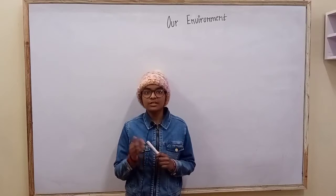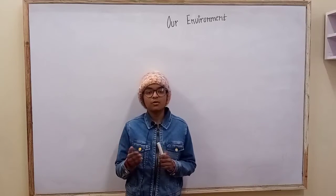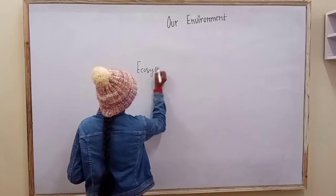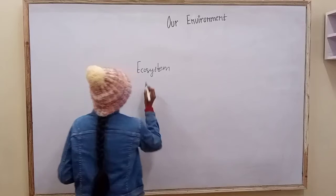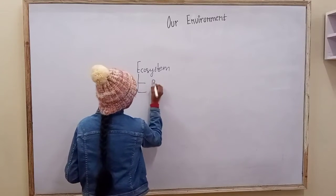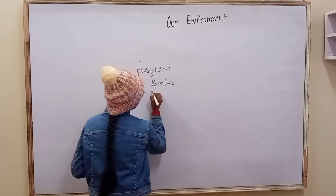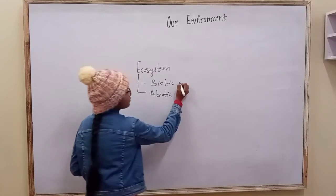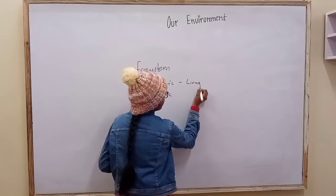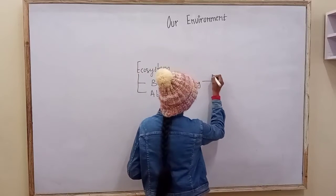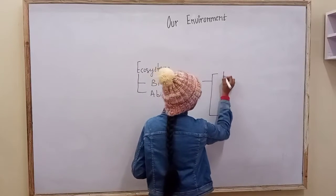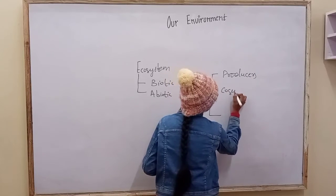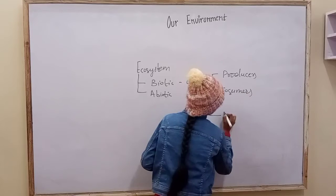Ecosystem contains the natural and human-made resources of nature. It contains two types: biotic and abiotic components. Biotic components are living organisms which contain three types: producers, consumers, and decomposers.